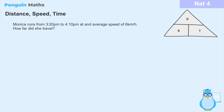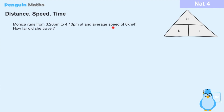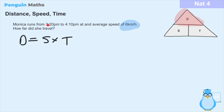For the final question: Monica runs from 3:20 pm to 4:10 pm at an average speed of 6 kilometers per hour. How far did she travel? We're asked 'how far' — so we need the distance. The relationship is: distance equals speed multiplied by time. We're given the speed as 6 kilometers per hour, but we need to calculate the time from the clock times given.